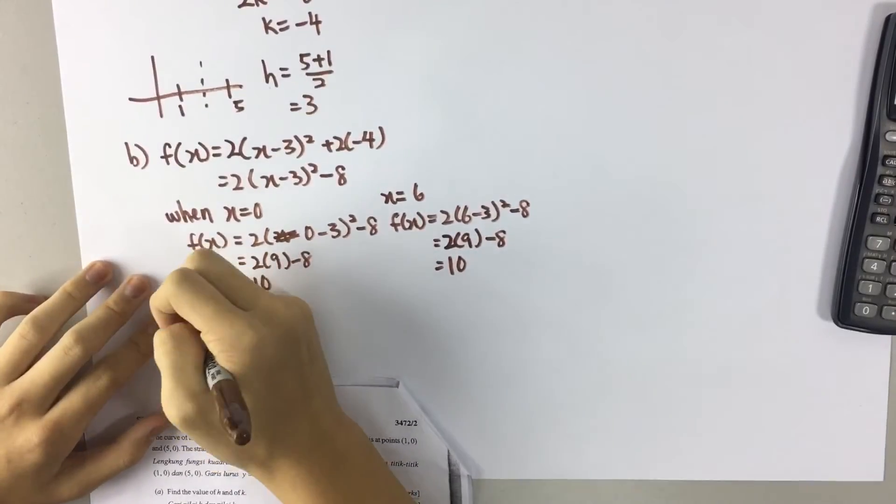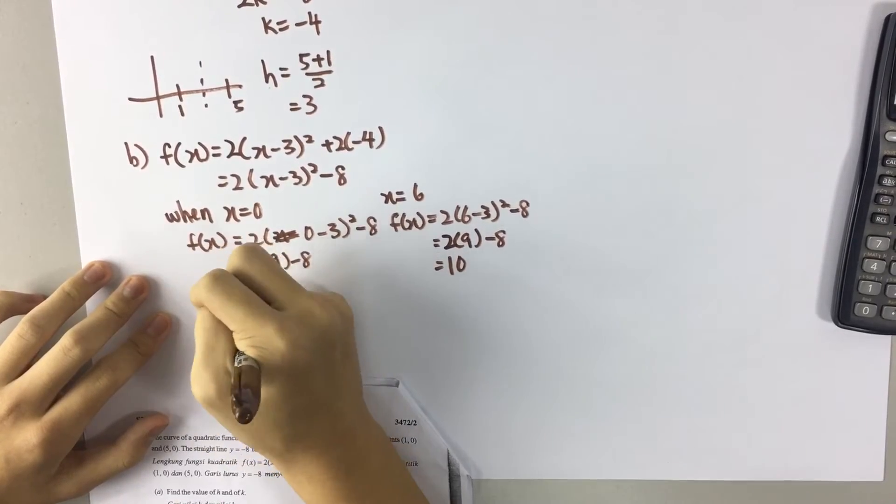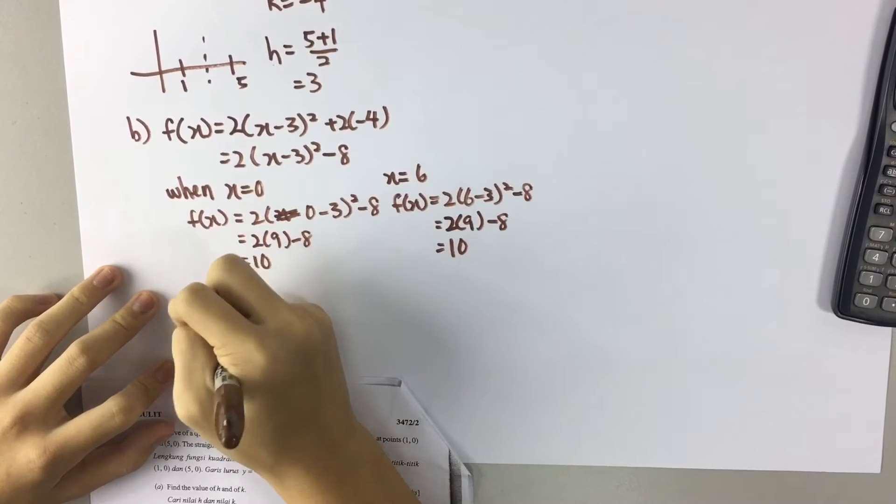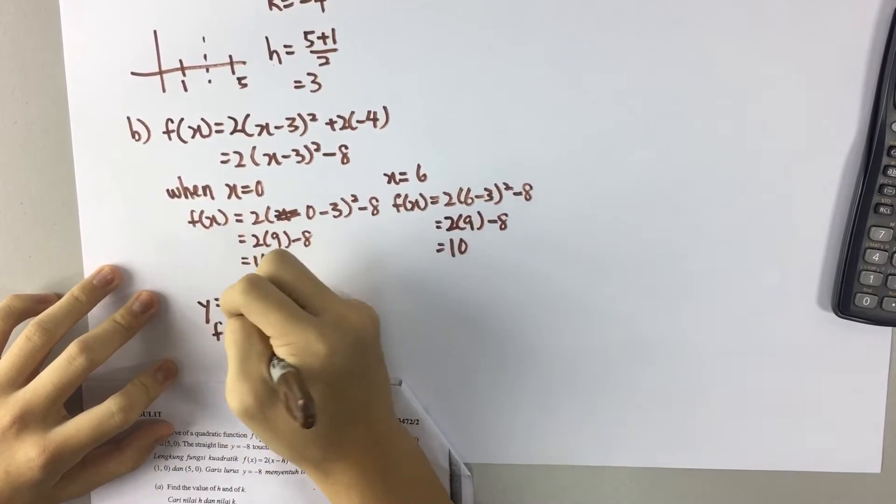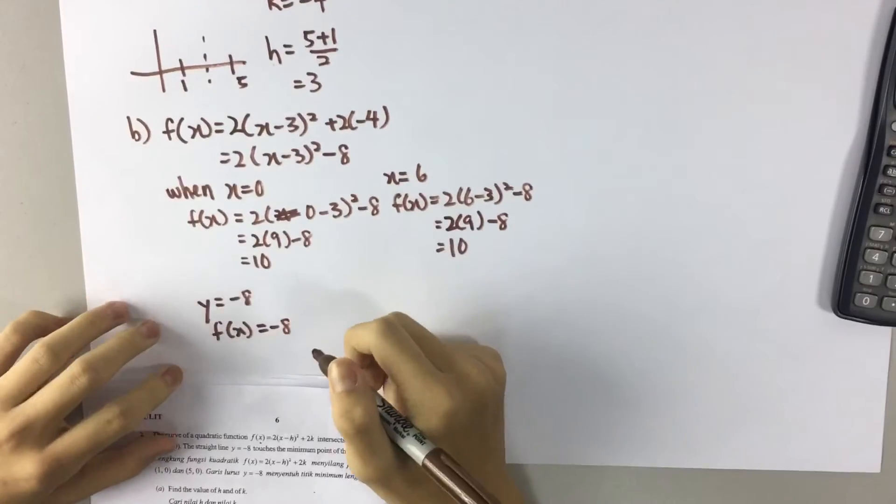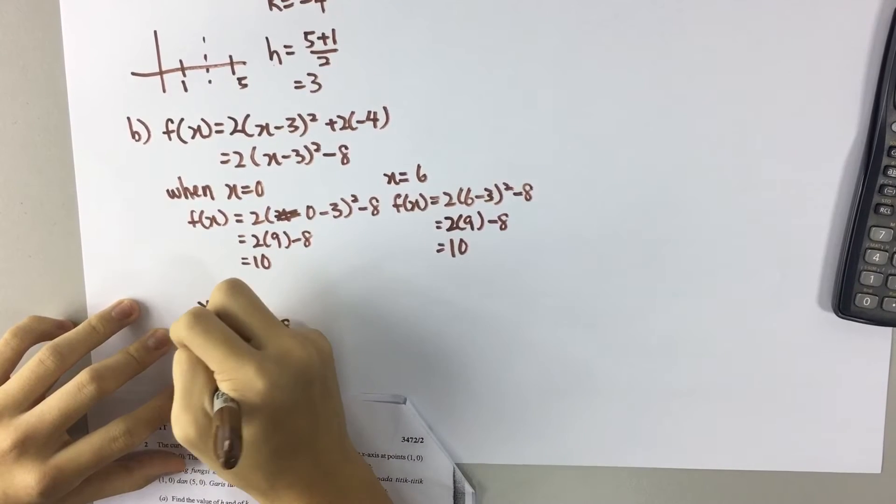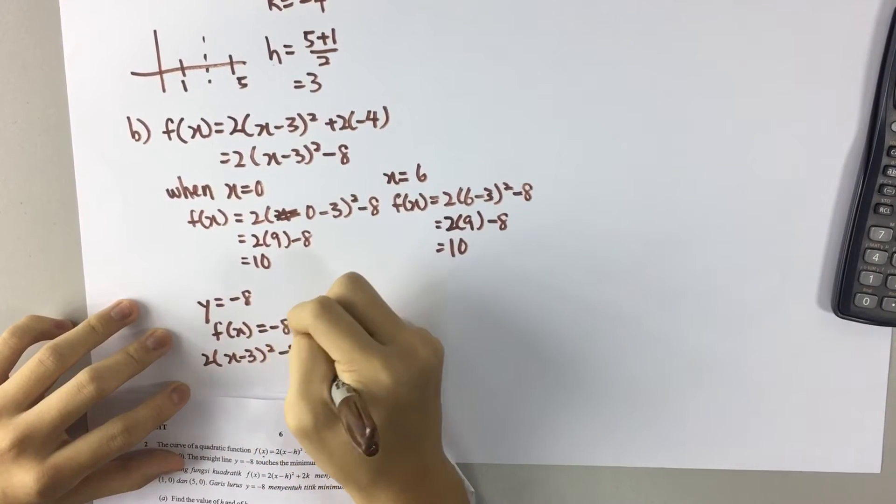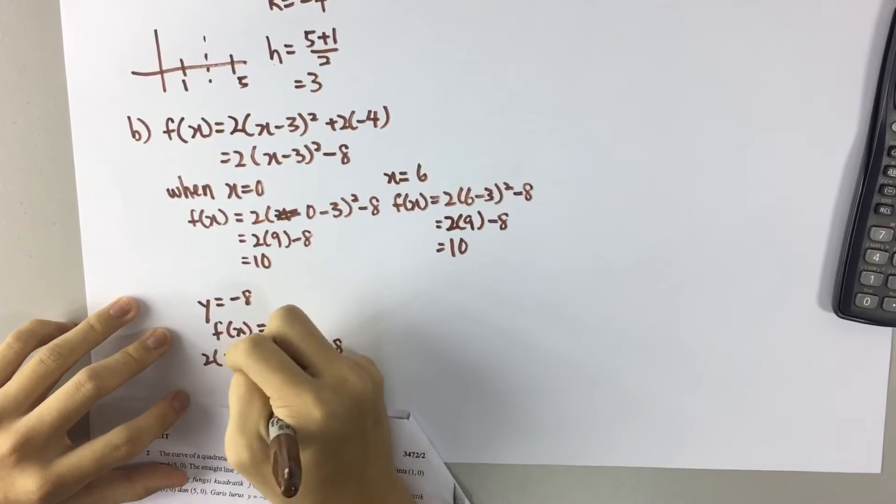When y is equal to negative 8, which means fx is also equal to negative 8. So 2(x minus 3)² minus 8 equals negative 8. So x is equal to 3.